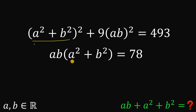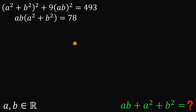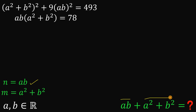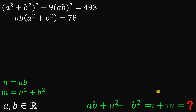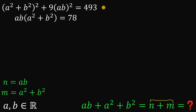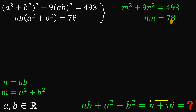Both equations now contain a² + b² and the product ab. Let's use substitution: let n = ab and m = a² + b². Therefore, ab + a² + b² is just n + m, so our new goal is to find n + m. We can transform the given equations as follows: the first equation becomes m² + 9n² = 493, and the second equation becomes n × m = 78.